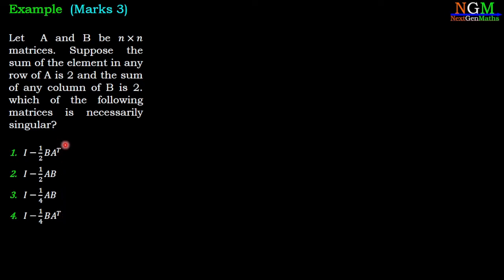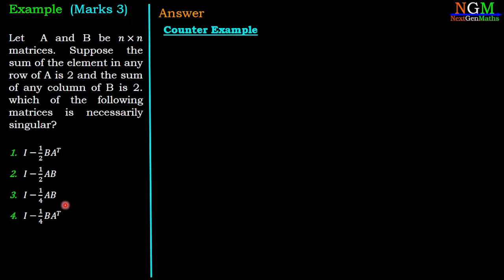Here we want to check the singularity of these given matrices. To solve this example, we will use a counter example. Consider two matrices A equal to [1 1; 2 0] and B equal to [1 2; 1 0].